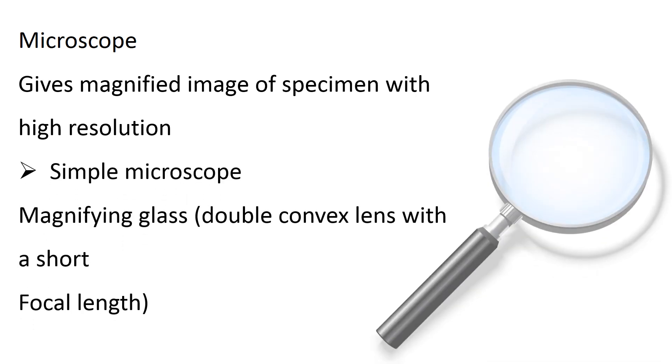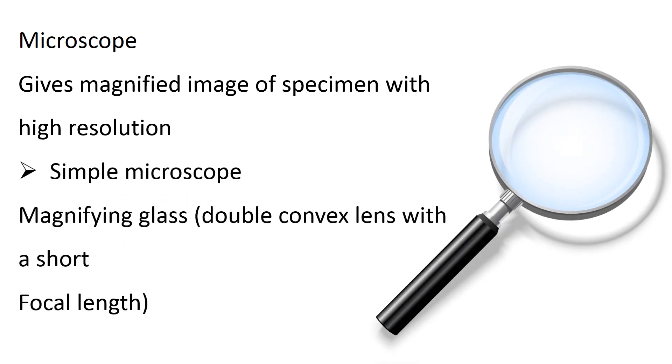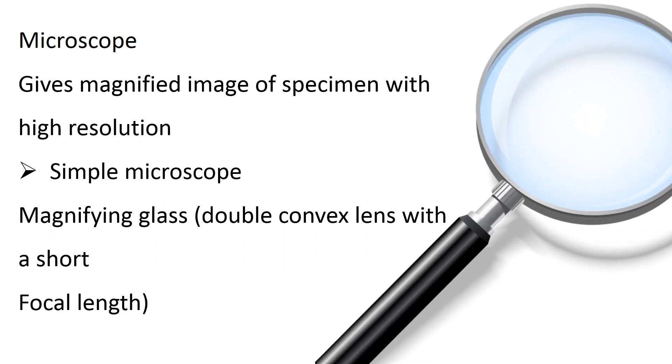Simple microscope: If a microscope has only one lens, then it is called a simple microscope. That is a magnifying glass with a double convex lens and short focal length.